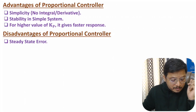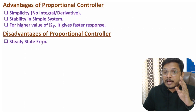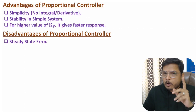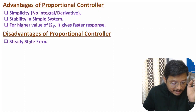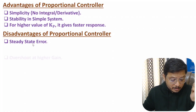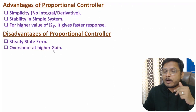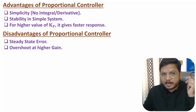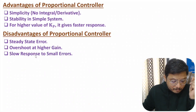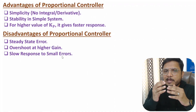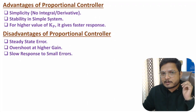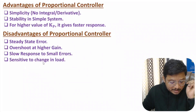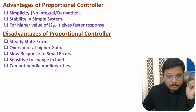Now the disadvantages: the proportional controller cannot eliminate steady-state error — always remember this. With a higher value of Kp, steady-state error will increase. There will be overshoot at higher gain, so if you have a higher value of Kp, overshoot will increase. With a lower value of Kp there is a slower response, which leads to small errors — so if you prefer small errors, you will have to lower the value of Kp. Additionally, it is sensitive to changes in load and cannot handle non-linearities.